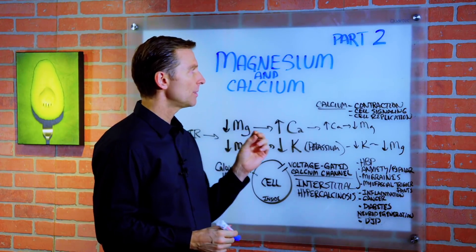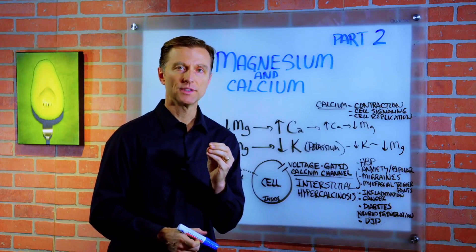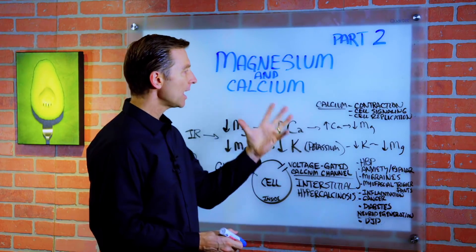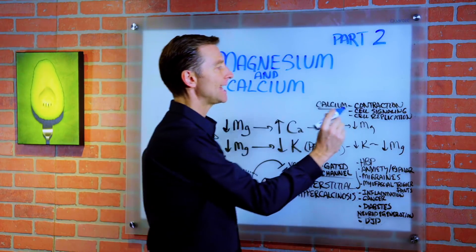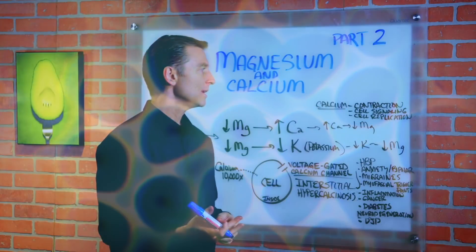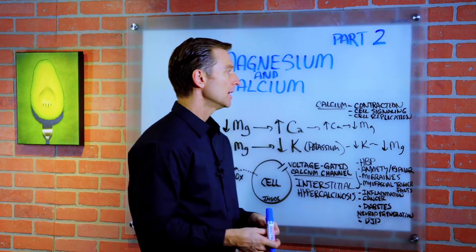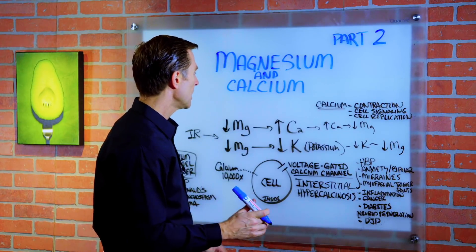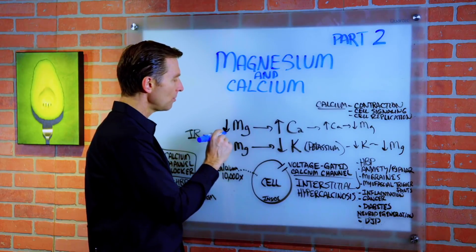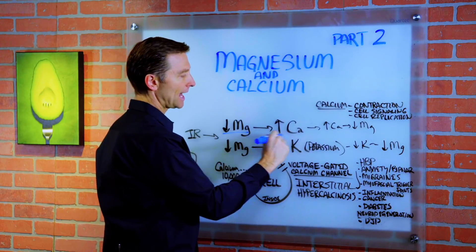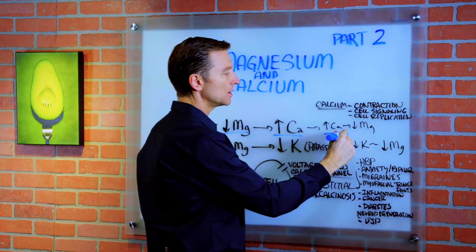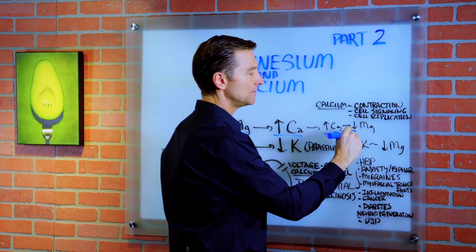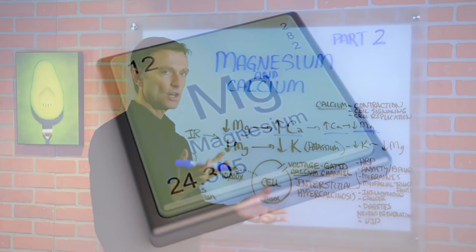One thing you need to know about magnesium: magnesium is involved in relaxation. Calcium is involved in contraction, but it's also involved in cellular signaling and cellular reproduction. So the function of calcium goes way beyond just making bone — it's involved in a lot of different things. As far as the interaction between minerals, when you have low magnesium, you're going to have high calcium. They kind of work opposing each other, like a teeter-totter.